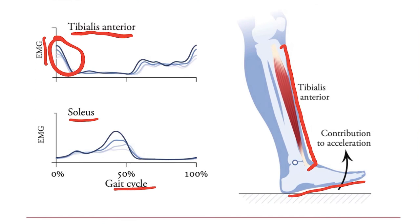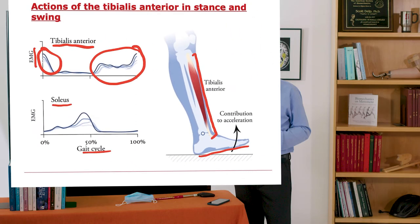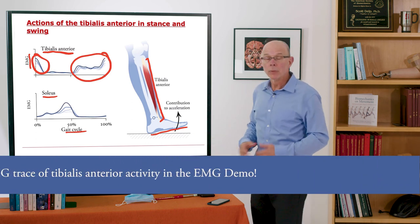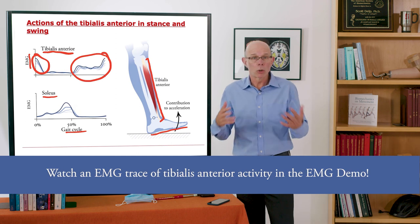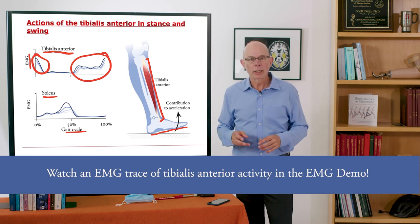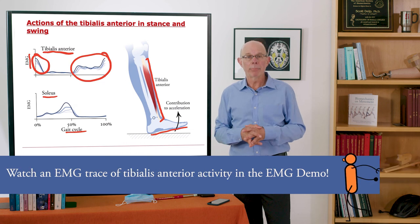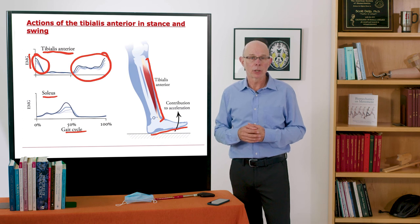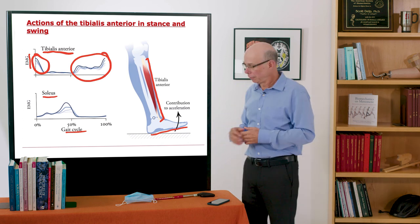Now notice also that the tibialis anterior is active during the swing phase. Remember 0 to 60 roughly is the stance phase. Swing phase here is 60 to 100. And the tibialis anterior is active at that time. It's active to simply lift the foot and keep the foot from dragging. In someone who's had a stroke or other neurological injury, the tibialis anterior will not be able to be activated and in those cases you'll get a phenomenon called drop foot.